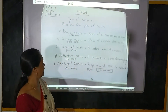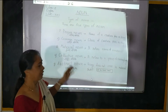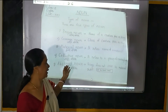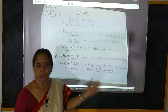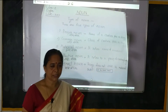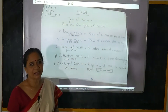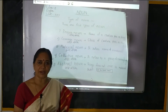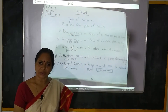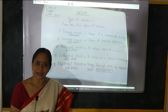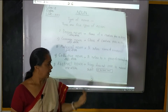Proper Noun ko samajhte hai. Proper Noun — name of a creature, place or thing. Creature matlab prani. Kisi prani ka Noun — aap ka naam, Neera ka naam. Aap ke ghar mein koi kutta hai, uska naam rakhe Tommy, toh ho jayega Proper Noun.